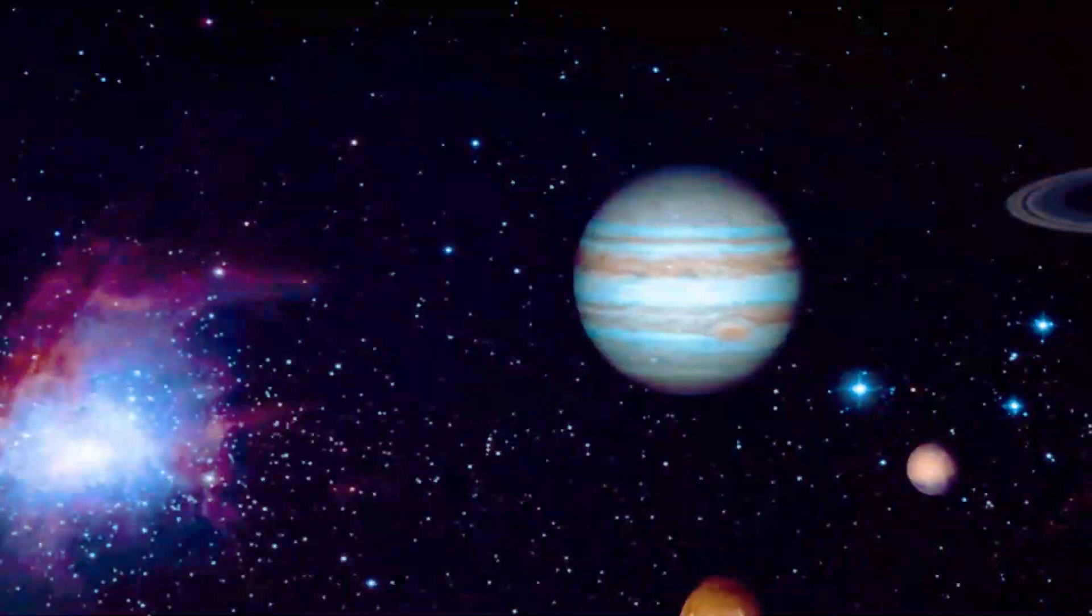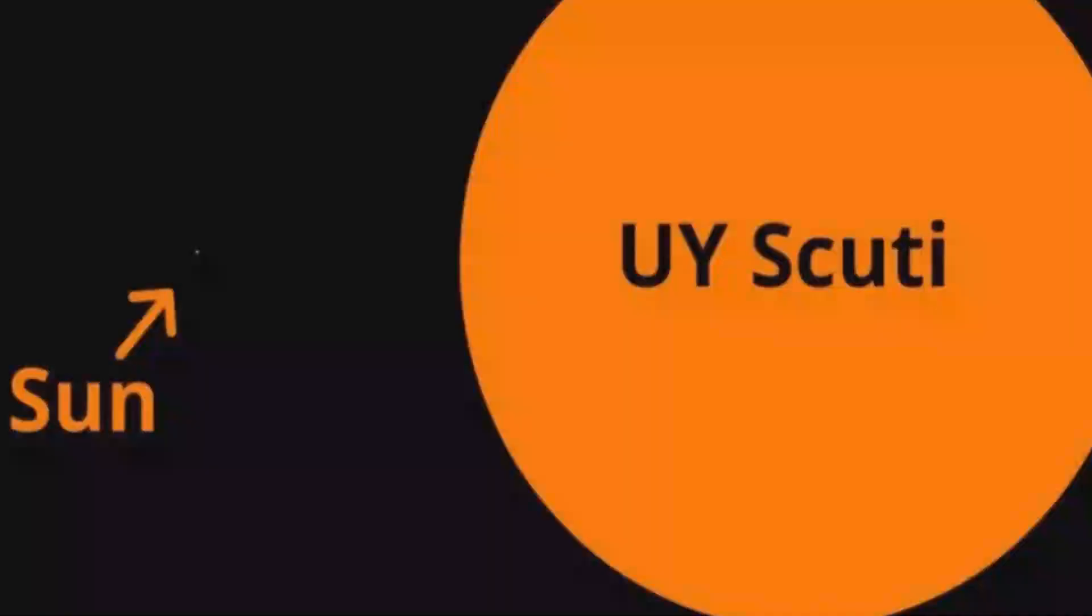To truly grasp the scale of UY Scuti, imagine almost 5 billion suns could fit inside a sphere the size of UY Scuti. The sheer scale of this star is almost impossible to comprehend. It is so large that it would take a beam of light traveling at 186,000 miles per second over seven hours to travel around its circumference.